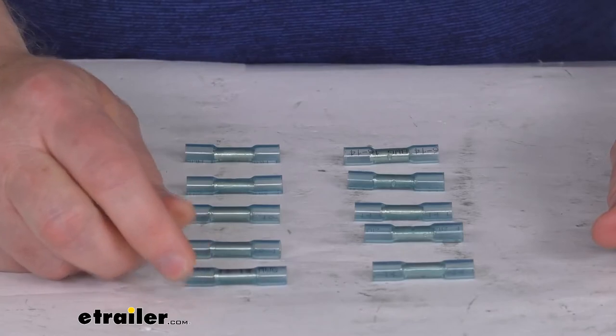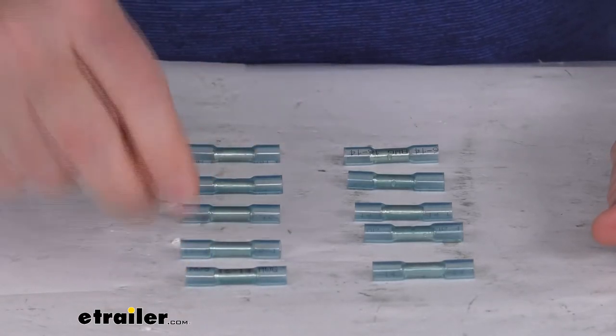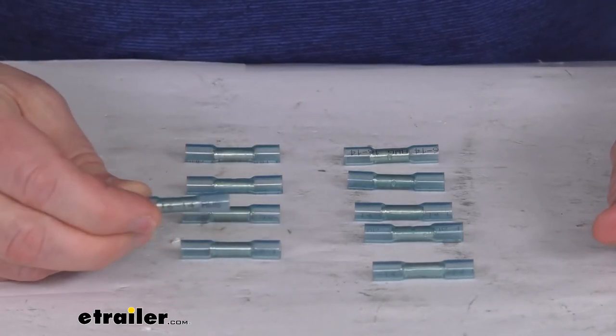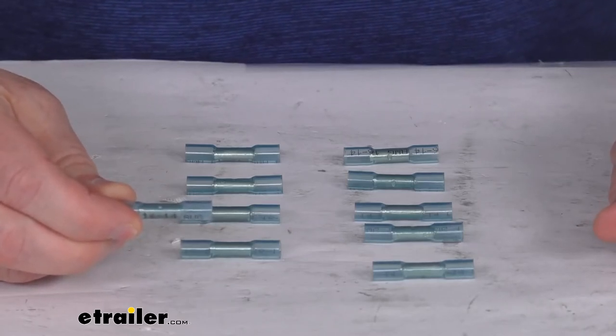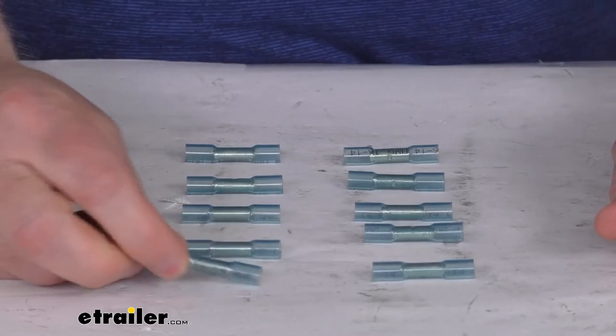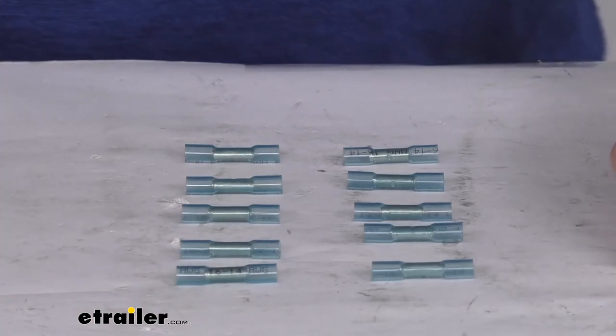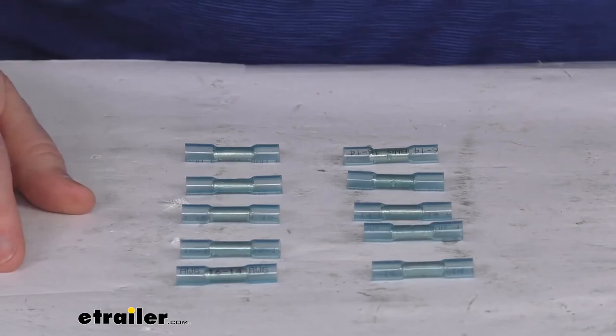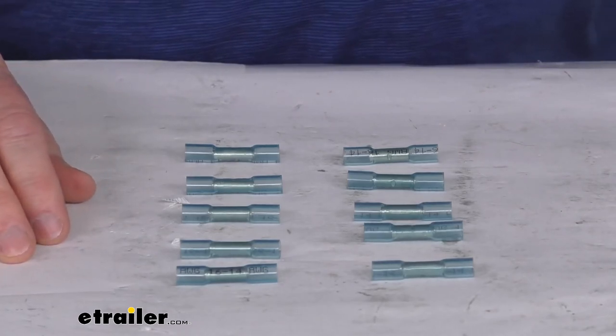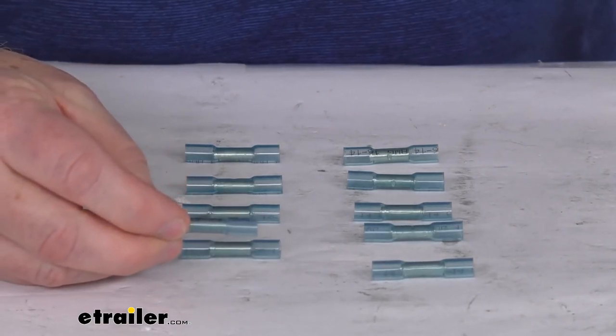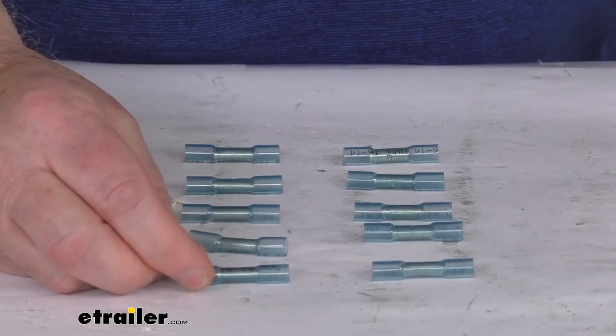This part number is for a quantity of 10 connectors. We also sell this in a single piece which is part number DW05744-1 and a 5-pack which is part number DW05744-5. That should do it for the review on the DECA blue butt connectors for the 16 to 14 gauge size wire for a quantity of 10.